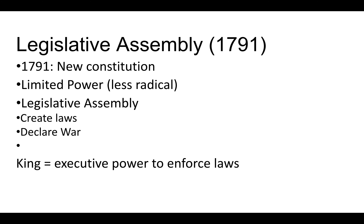The Legislative Assembly decides to try to limit some of the more radical things happening and some of the chaos in the country. In 1791, a new body is formed called the Legislative Assembly and they create a new constitution — a written document — that limits the power of the assembly but also limits the power of the monarch. They have the ability to create laws and declare war, taking away powers the king used to have.